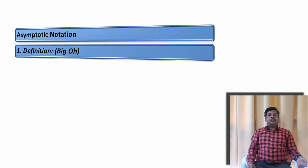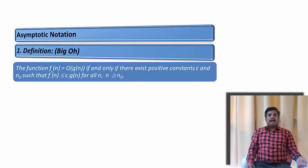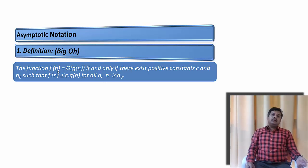Now let us talk about asymptotic notation. Let us go to the definition first. The definition says: if f is a function, we say this function is of order g, or f belongs to O, if and only if there exist a constant c and n0 such that f is less than or equal to c·g(n) for all n where n is greater than or equal to n0. We are going to find an asymptotically equivalent function g which satisfies this condition, and we name it in the form of Big O.